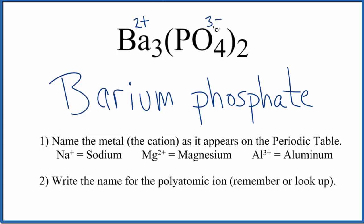So we need these charges here to balance, and the only way we can do that is have 3 bariums and 2 phosphate ions. So that gives us the formula Ba3(PO4)2.